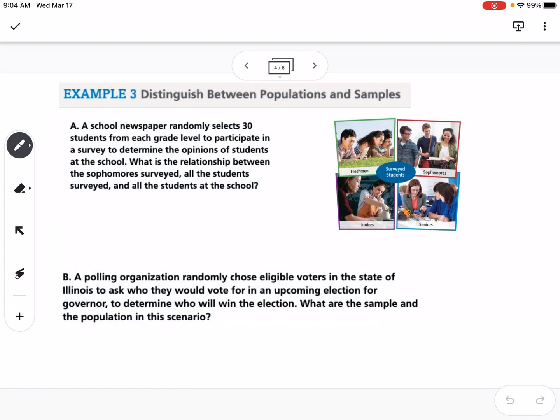Example three is distinguishing between populations and samples. Part A says a school newspaper randomly selects 30 students from each grade level to participate in a survey to determine the opinions of students at the school. The population is the set of all members in a group that you want to know something about. So the population would be all students at the school.